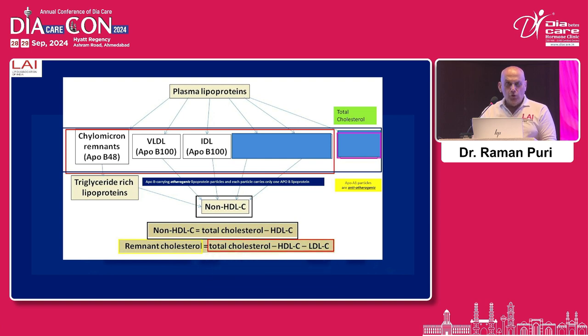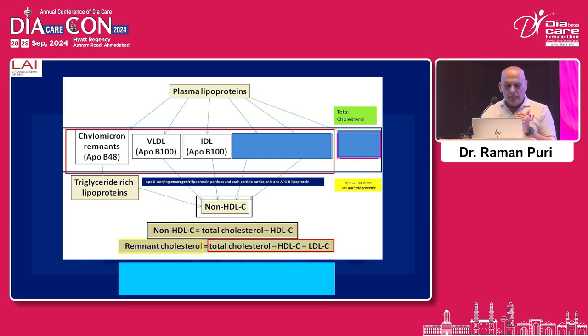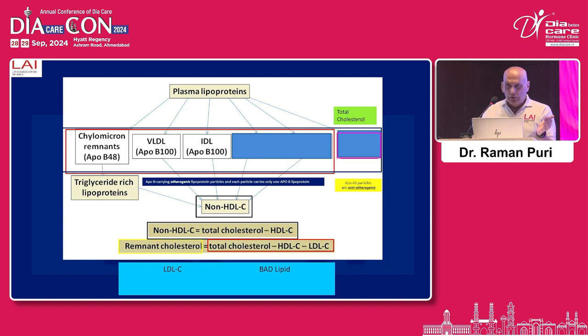So what is good, bad, and ugly? Bad — no doubt — is LDL cholesterol. Ugly is triglyceride, apoprotein, or remnant cholesterol. And good, of course, is HDL cholesterol.